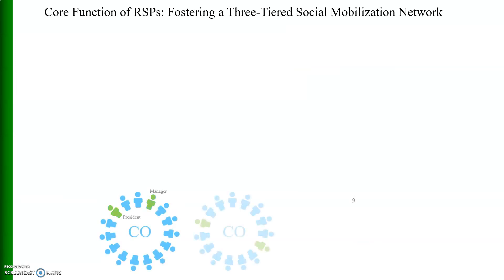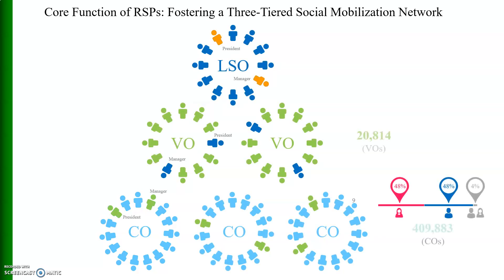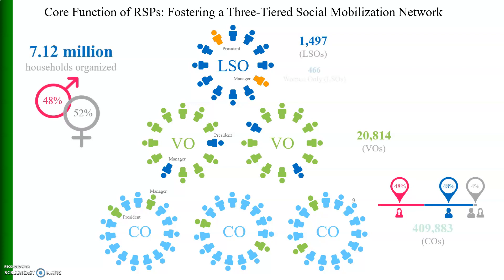The core function of rural support programs is fostering a three-tiered social mobilization network. The first tier consists of Local Support Organizations — there are 1,497 LSOs, of which 466 are women's LSOs. The second tier comprises Village Organizations, with a total of 20,814. The third tier is Community Organizations, with a total of 49,883 in Pakistan. This network covers 7.1 million households, constituting 48% of the total households.